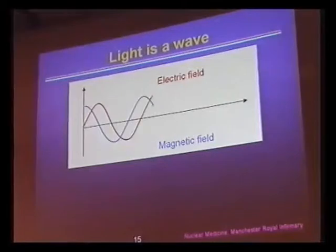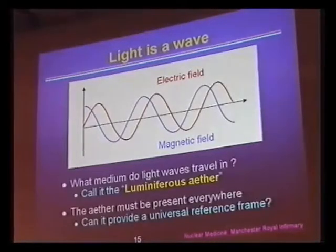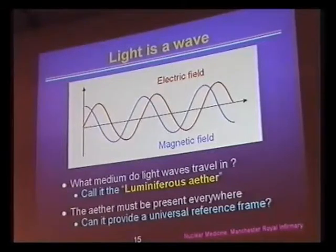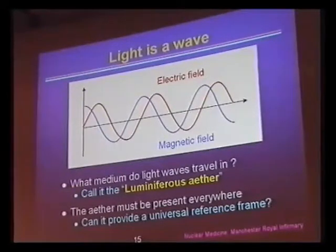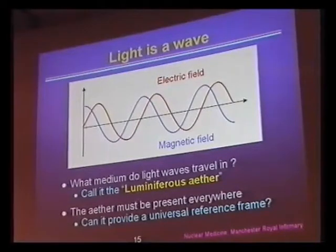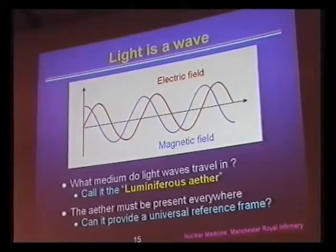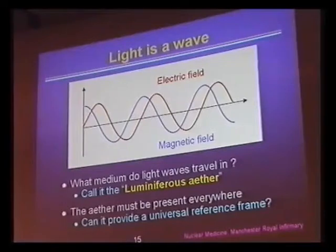So if light is a wave of oscillating electric and magnetic fields, what medium does it travel in? We know that sound waves travel in air, water waves travel in water. What does a light wave travel in? Well, let's just call it the luminiferous ether. Light is everywhere, even in empty space, so the ether, if it exists, must be present everywhere too. So maybe it can provide this universal reference frame that everyone was seeking.